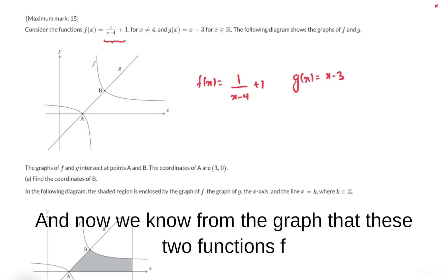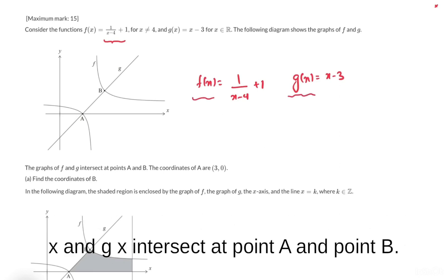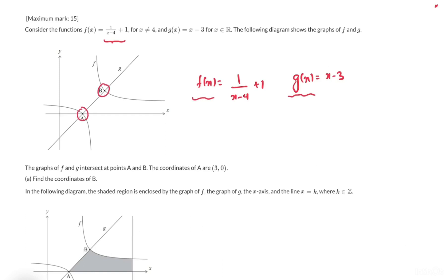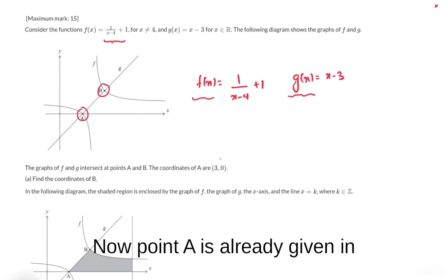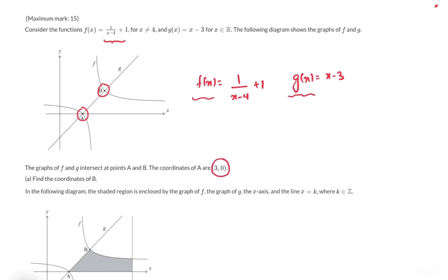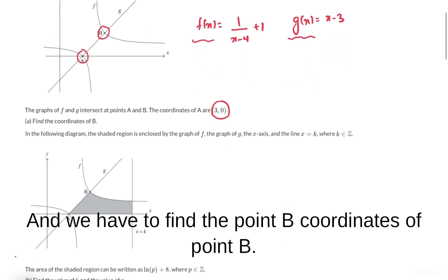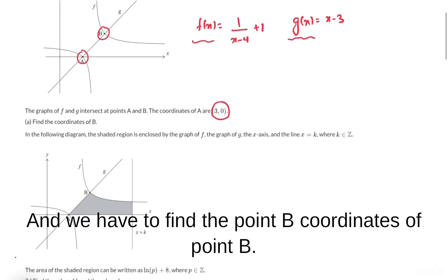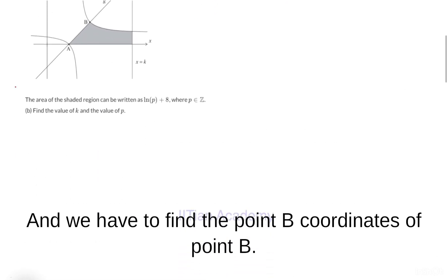We know from the graph that these two functions f(x) and g(x) intersect at point A and point B. Point A is already given in the question, which is (3, 0), and we have to find the coordinates of point B.